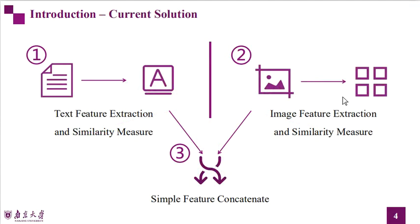Recent research on crowdsourced test reports is usually divided into two parts: textual descriptions and app screenshots. Existing research has analyzed these two parts separately. After obtaining the results of the two parts, most current research simply concatenates imaging information and text information. However, this processing causes the relationship between the textual description and app screenshots to be ignored, which may make the report prioritization less effective.